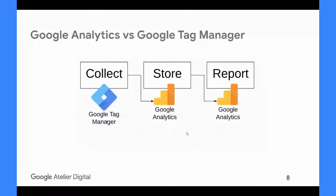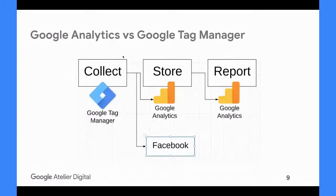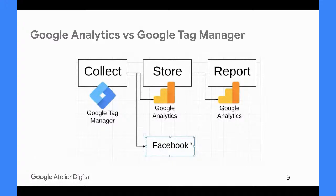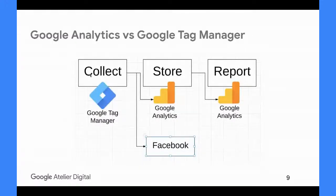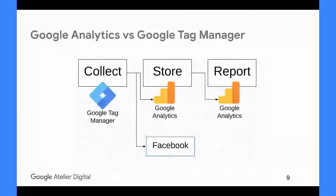Aujourd'hui, on est en 2020 et on va être un tout petit peu plus moderne. On va utiliser Google Tag Manager pour faire la collecte, parce qu'il a été créé pour ça. L'avantage majeur de Google Tag Manager, c'est qu'on va mettre en place le tracking, la mesure des choses qu'on veut voir. On va définir des règles à l'intérieur de Google Tag Manager pour définir ce qu'on veut traquer. Ensuite, on va envoyer ça chez Google Analytics, mais aussi chez Facebook, chez Google Ads, chez n'importe quel fournisseur tiers. La configuration qu'on aura faite une fois ici n'a pas besoin d'être refaite pour chacun. C'est ça l'avantage gigantesque de passer par Google Tag Manager.